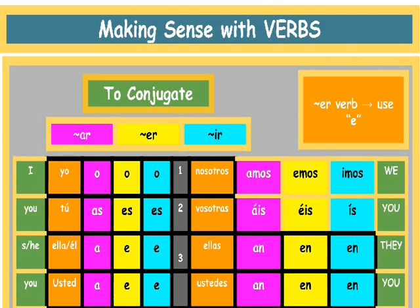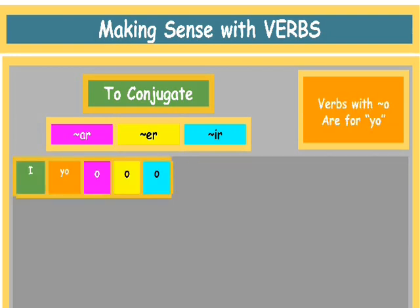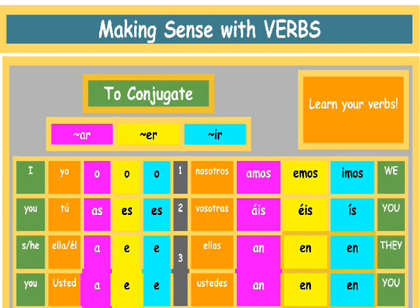Now this is what your chart looks like. The outside of the boot looks just like that. Now for the yo form, you have to remember: make the stem and add an O — most of the time, for regular verbs. You have to learn your verbs. That's all it is.